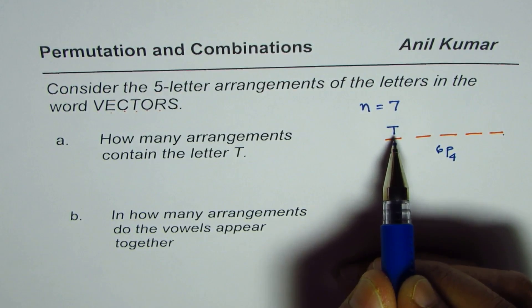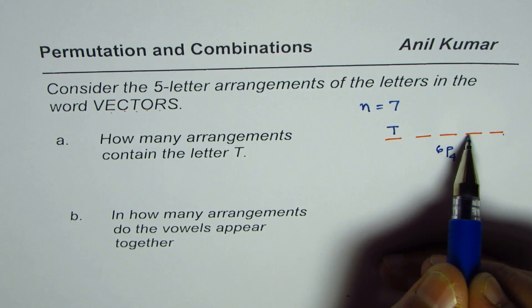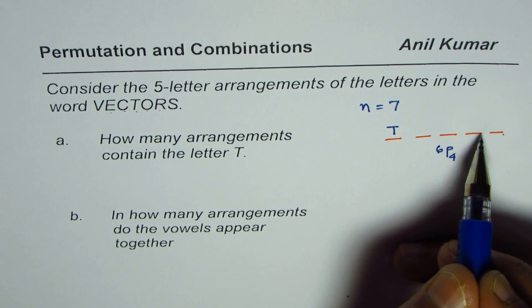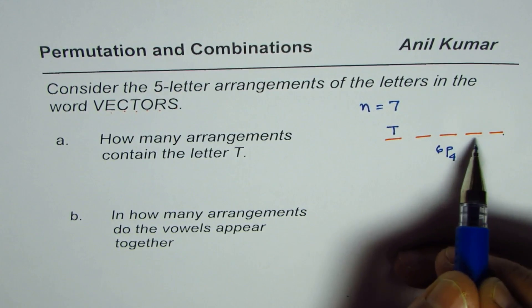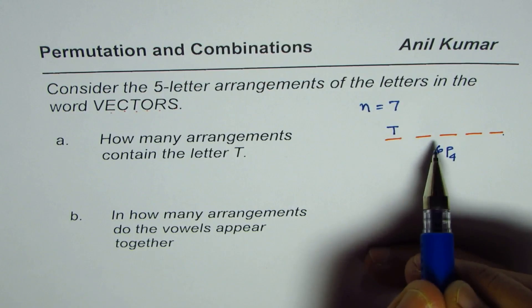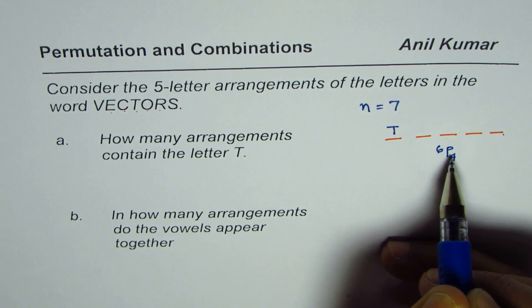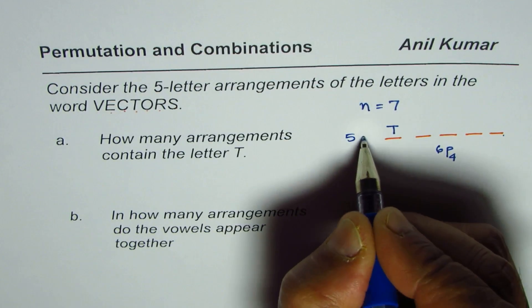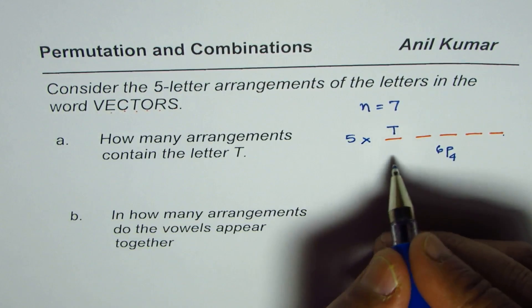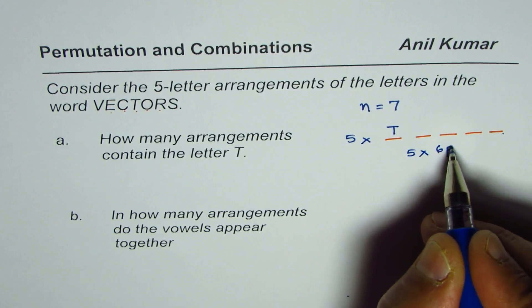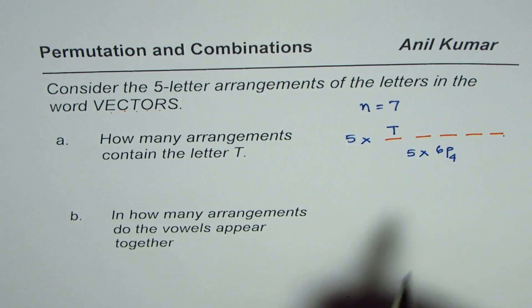Now remember, T, the position of T could be either in the first place or the second, third, fourth, or fifth place. So there are five positions for T, and for each position we have the same number of permutations. So it should be multiplied by five. Therefore, the total arrangements will be five times 6P4.